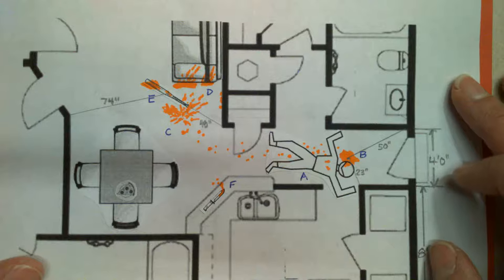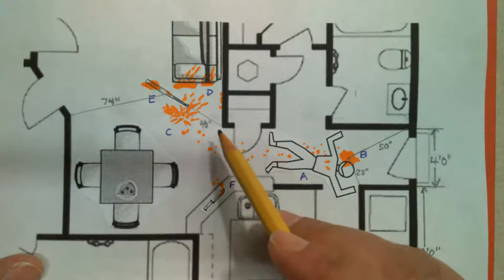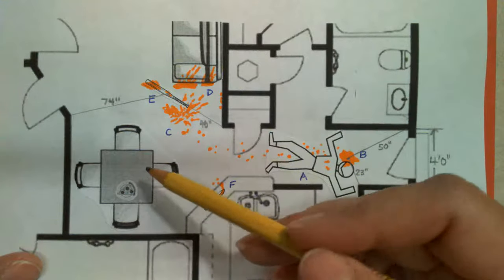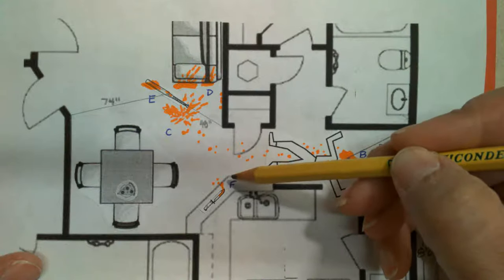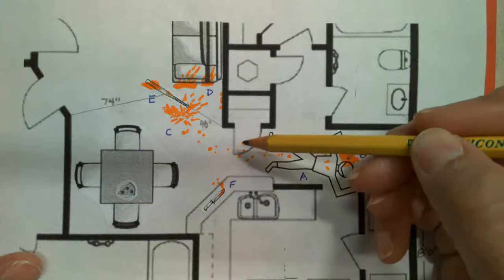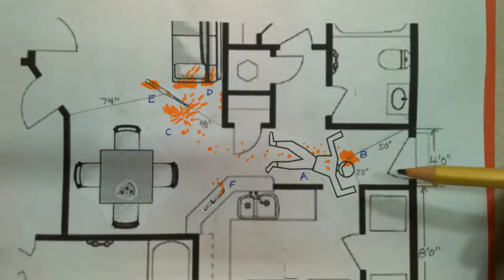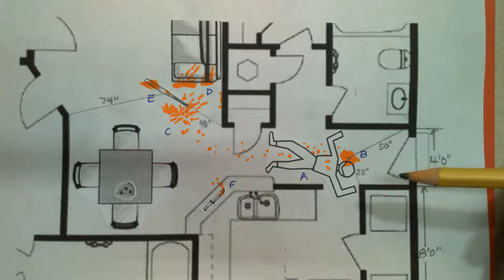So what would we use for other fixed points? Well, corners of walls make great fixed points. Furniture, not so much. You can move furniture. Could you use, for instance, this counter? Yeah, the counter is not going to move. Could you use this door? No, doors move. So you just have to use your best judgment when it comes to what is and is not a fixed point.